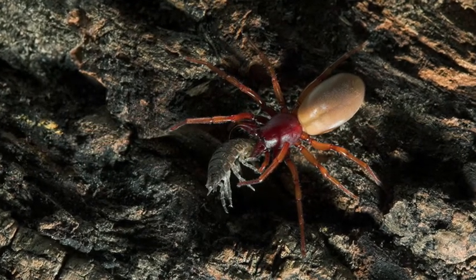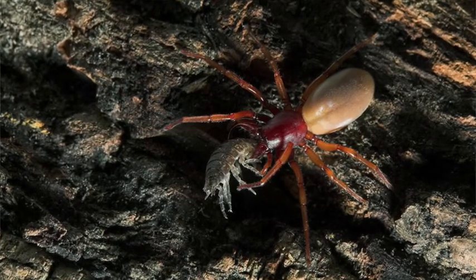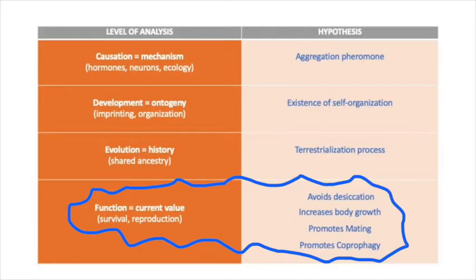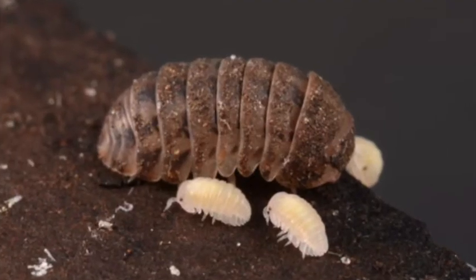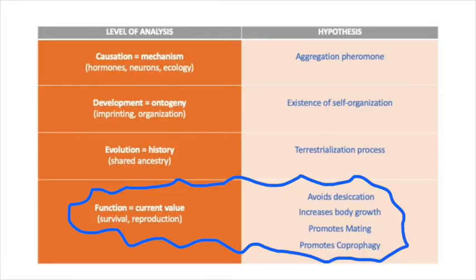Woodlice produce secretions that repulse spiders, their main predators. It is possible that aggregation could intensify this effect. Aggregation has also shown to promote body growth. Larger females produce more offspring, which means higher fitness. Similarly to quails mentioned in module 11, aggregation in woodlice facilitates mating by increasing the probability of encounters between males and females.